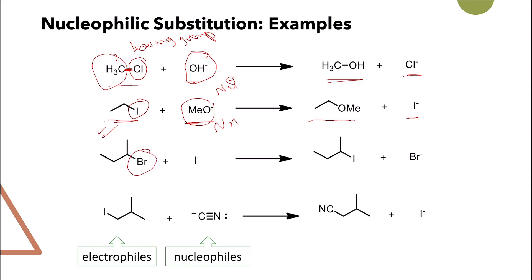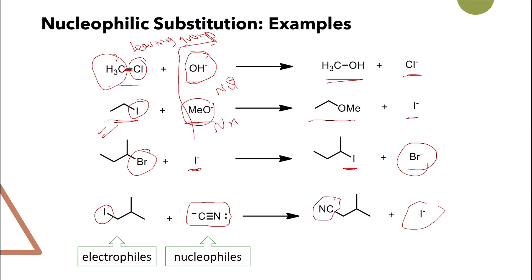If we have a bromide with iodide, although both are halides, one halide can substitute another, so you end up with iodide and the bromide ion. Cyanide can also act as a nucleophile, so the cyanide can replace iodide to give you the cyano compound and the iodide. So all of these species are nucleophiles, with the electrophile on one side and these are the substitution products.